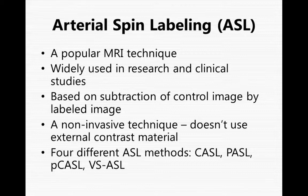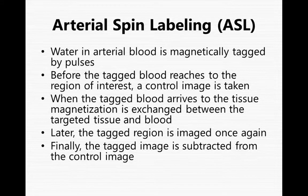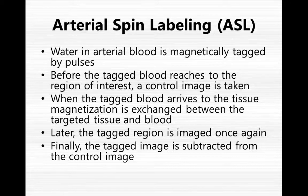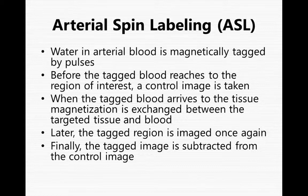There are four different ASL methods. To perform ASL, we first magnetically tag water located in arterial blood by pulses. Then a control image is taken before the tagged blood reaches the region we are interested in imaging. When the tagged blood arrives at the tissue, the targeted tissue and blood exchange magnetization. Later, we image the tagged region. Finally, we subtract the tagged image from the control image.